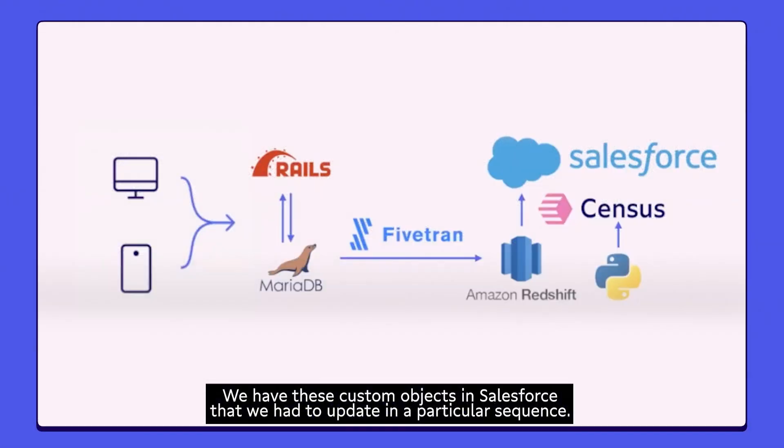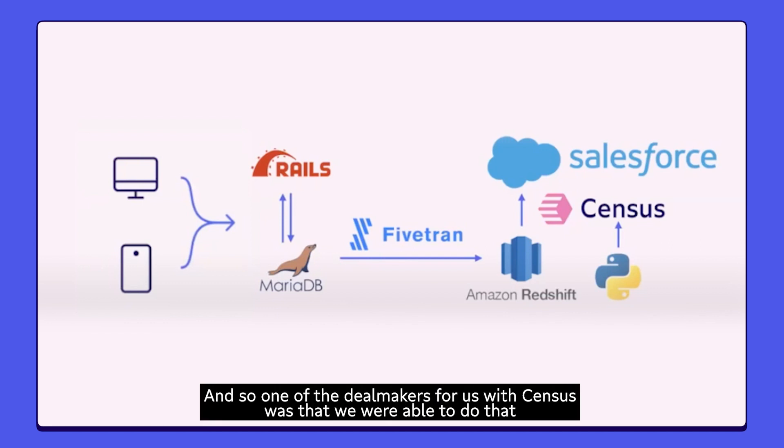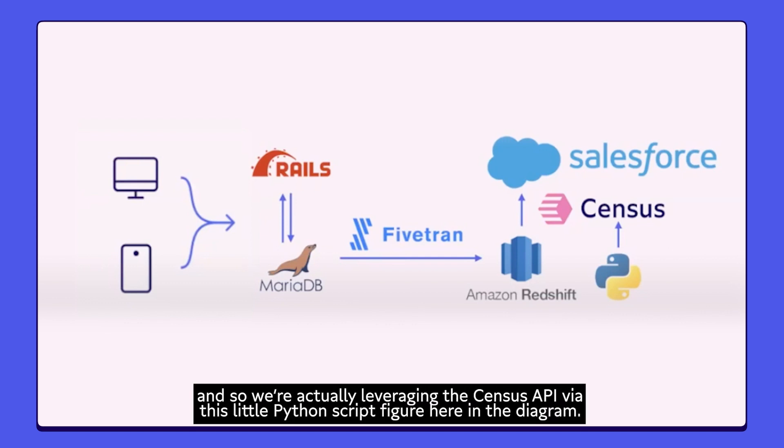We have these custom objects in Salesforce that we had to update in a particular sequence, and one of the deal makers for us with Census was that we were able to do that. We're actually leveraging the Census API via this little Python script figure here in the diagram.